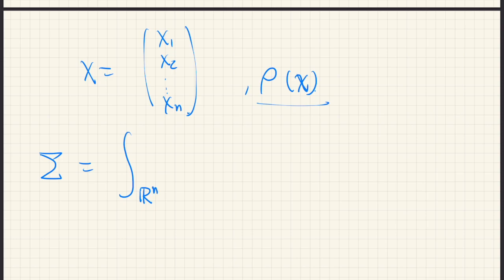So we integrate over all space the density and x, so this is a vector, minus mu. Mu is the mean of this random variable, random vector x. And x minus mu transpose dx.